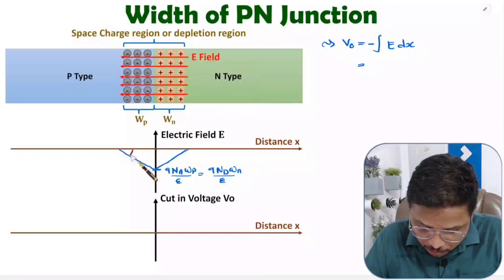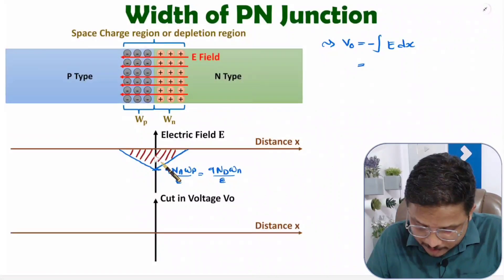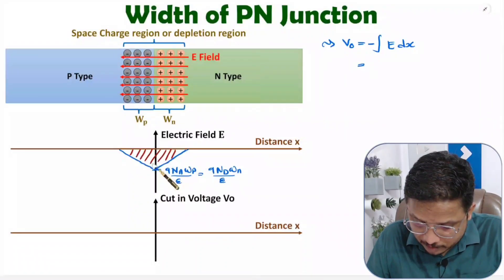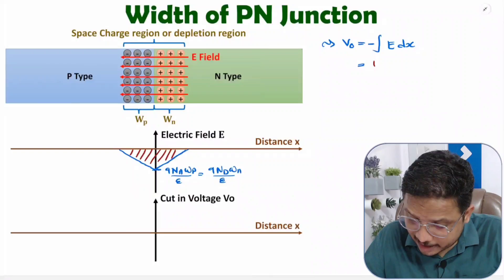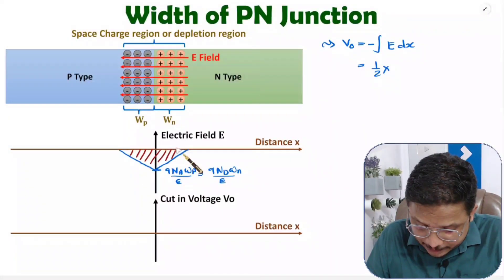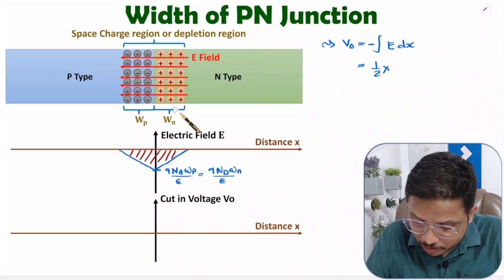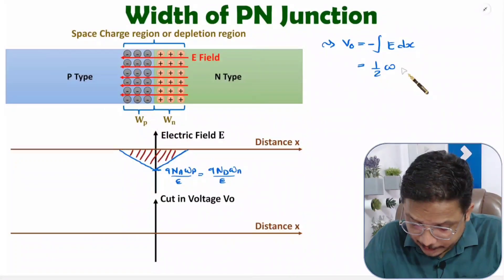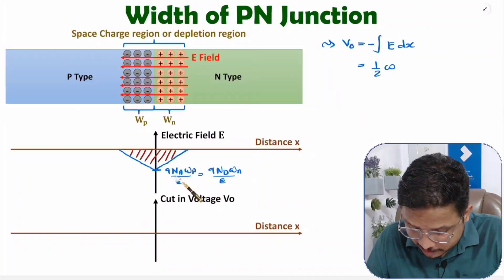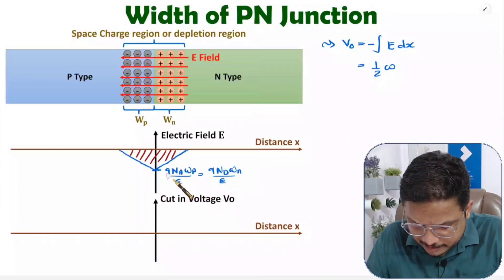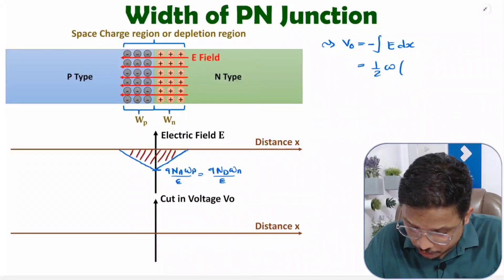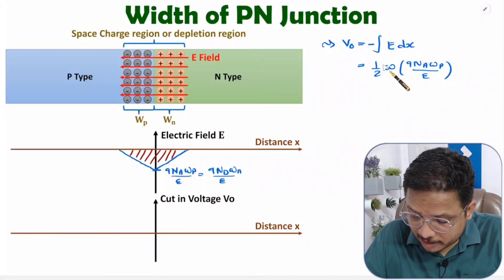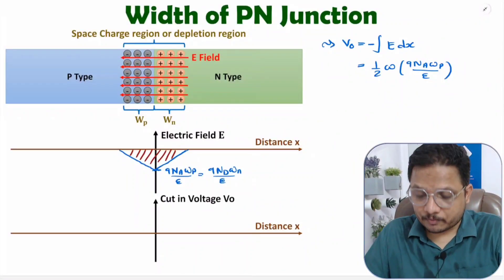To evaluate the integration of E·dx, we just calculate this area on the graph. This shape is a triangle, so the area equals half of base times height. The base is the total width W (which is Wp + Wn) and the height is q·Na·Wp / ε. So that area equals the cutting voltage V0.